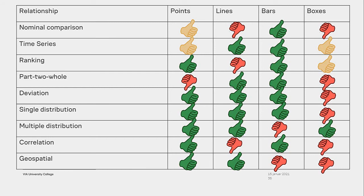For a ranking type, look for words such as: larger than, smaller than, equal to, greater than, or less than. For a part-to-whole comparison, look for words such as: rate or rate of total, percent or percentage of total, share, or accounts for x percent. For a deviation, look for words such as: plus or minus, variance, difference to, or relative to.